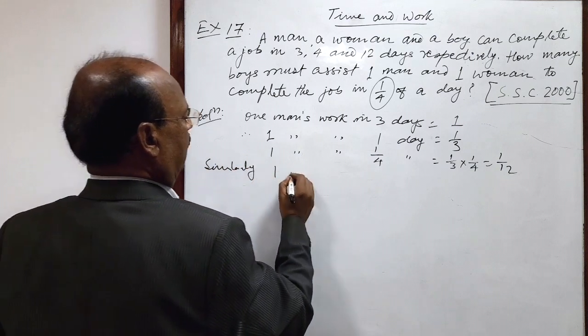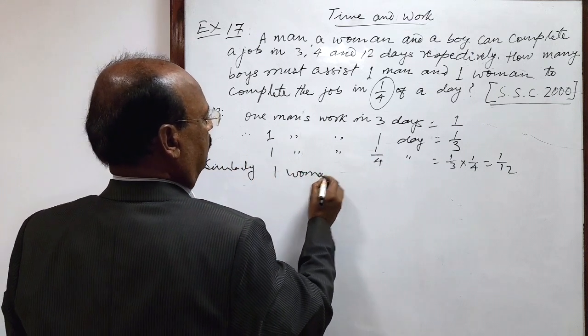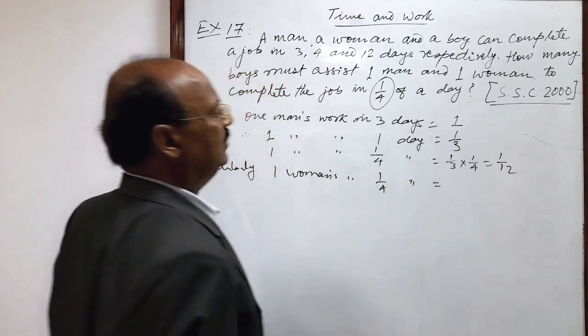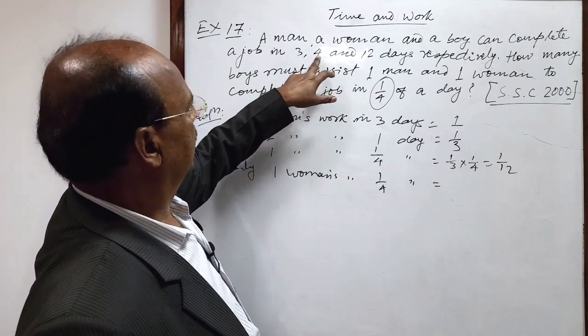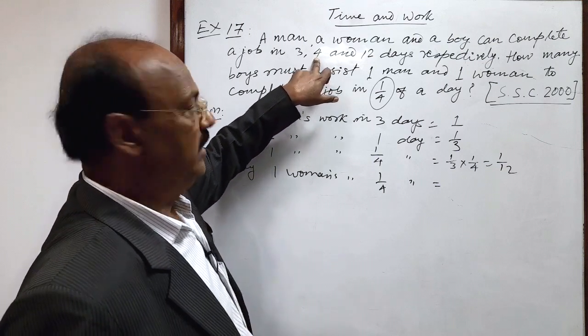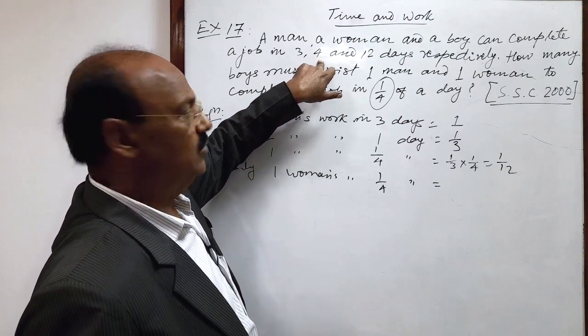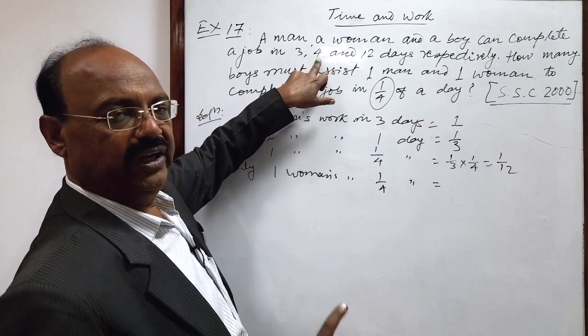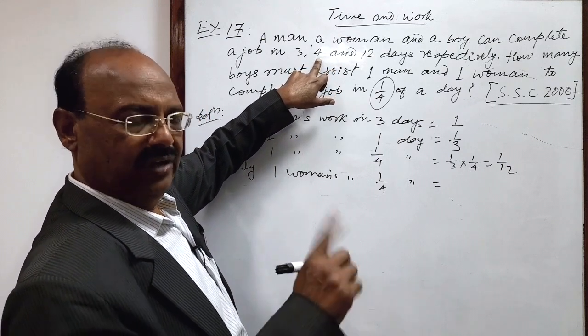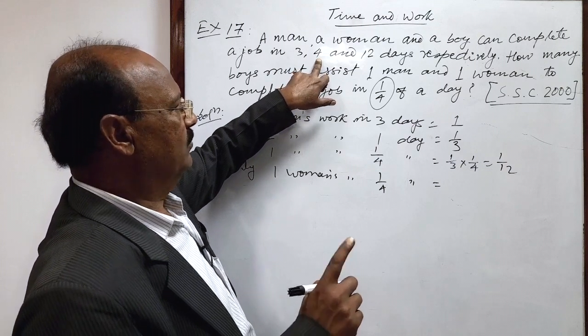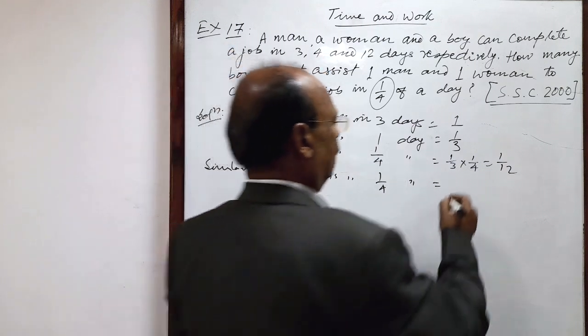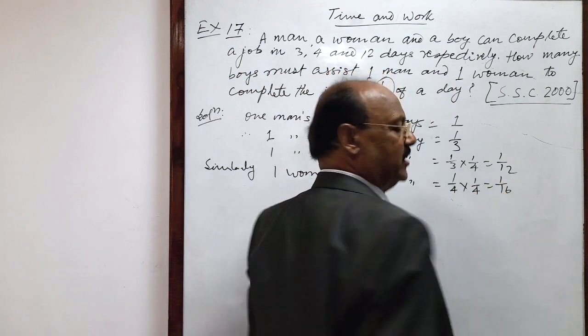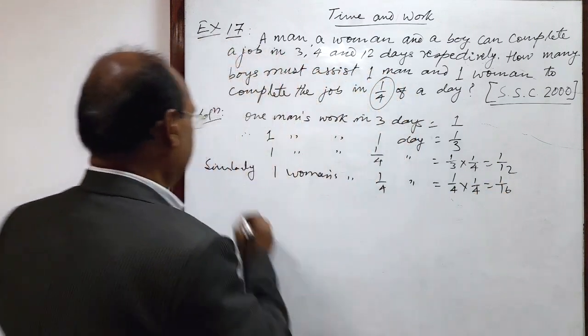Similarly, one woman's work in 1 by 4th day will be how much? This is number of days by a woman required to complete the job, 4 days. So in 1 day, amount of work done will be 1 by 4 and in 1 4th of the day, 1 by 4 into 1 by 4, this is equal to 1 by 16.